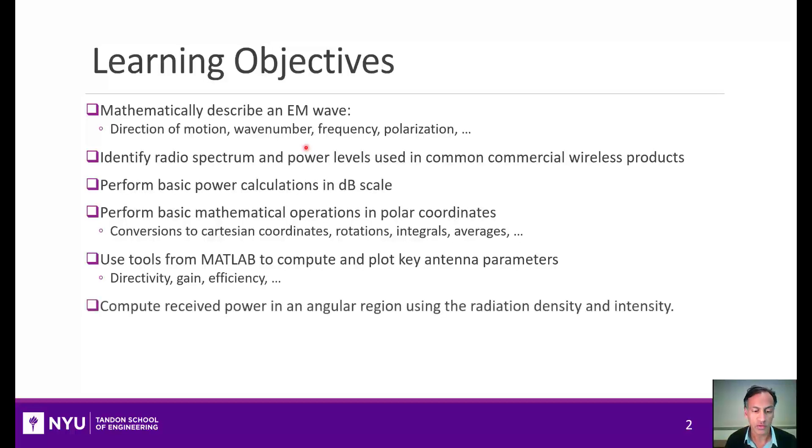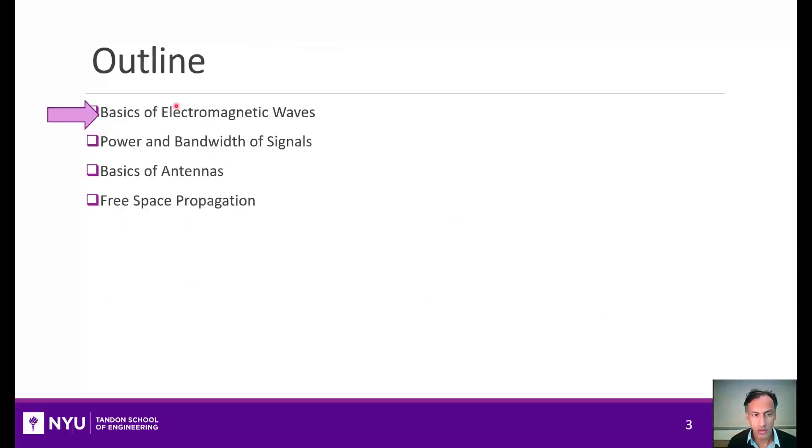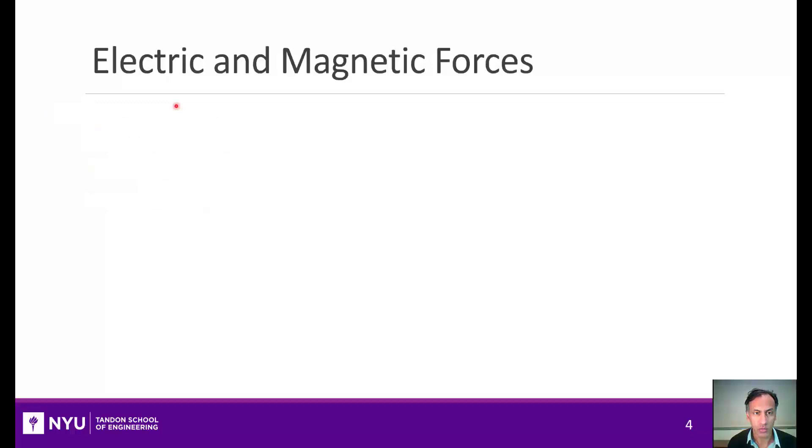I'll also show you how to compute the received power in certain angular dimensions and compute a very important property which is the free space path loss. I'll also show you how to derive that equation for the free space path loss which is Friis's law. Let's start with our first section which is the basics of electromagnetic waves.